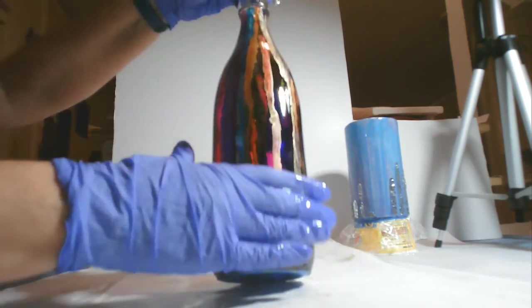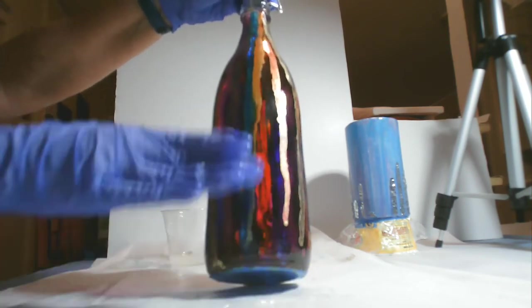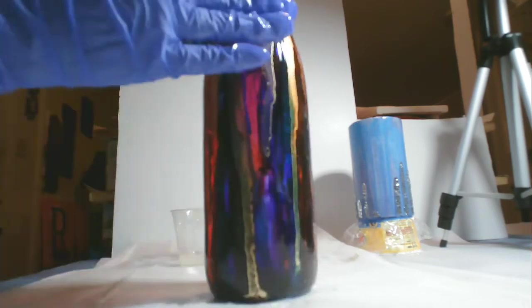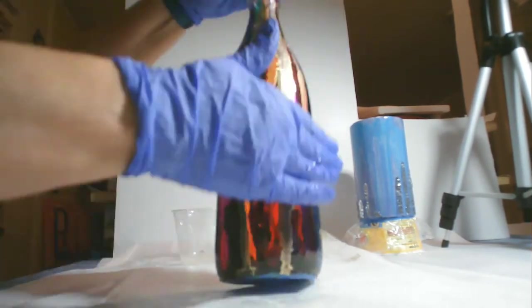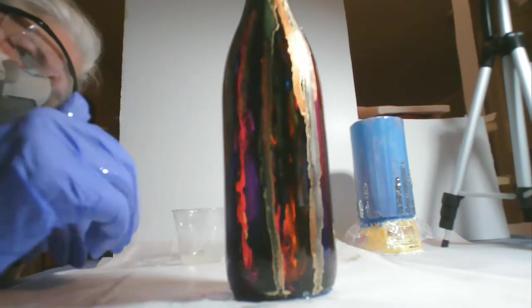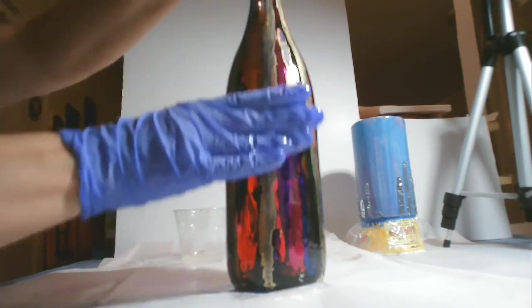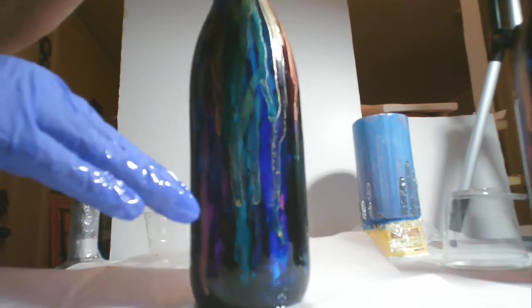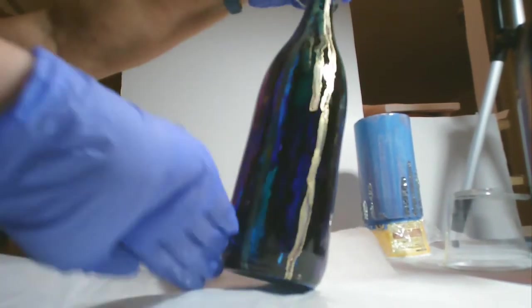Rather than just pouring it on here, because that would be a lot of waste and we don't want to waste resin. But you can already tell how the resin is causing those colors to shine through, and even from the transparency you can see the colors on the other side of the bottle.